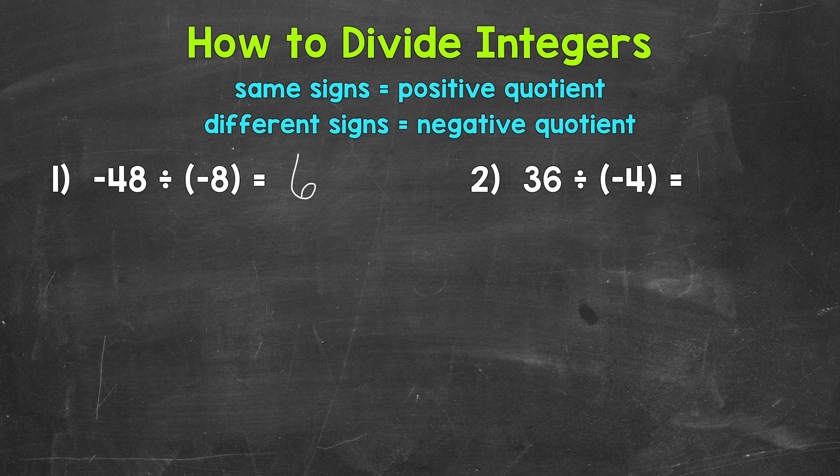And now we need to determine if our quotient is positive or negative. Well, we had a negative divided by a negative. So anytime we have the same signs in our original problem, our quotient is positive. Same signs, positive quotient. So negative 48 divided by negative 8 equals a positive 6.